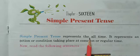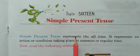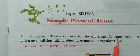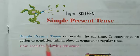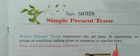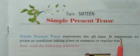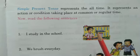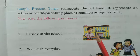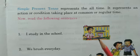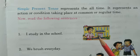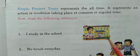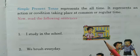Simple Present Tense represents all time. Samaadhi Vartman Kaal sabhi samay ka pratinidhik karta hai. It represents an action or condition taking place at common or regular time — yaani nimit samay par honi wali kriya ya sthiti ka pratinidhik karta hai. In other words, we use the Simple Present Tense when an action is happening right now, or when it happens regularly — abhi ho raha ho ya nimit roop se present mein ho raha ho.